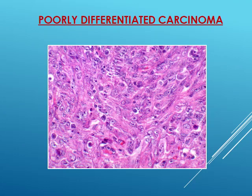In poorly differentiated carcinoma, cells move further away from the normal cell appearance. There are no cell nests or keratinization. Pleomorphism is more pronounced, and nuclear changes are more apparent.